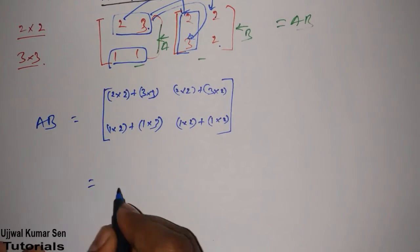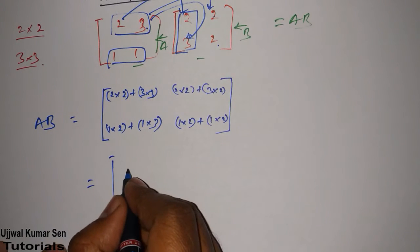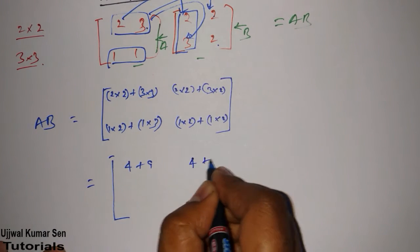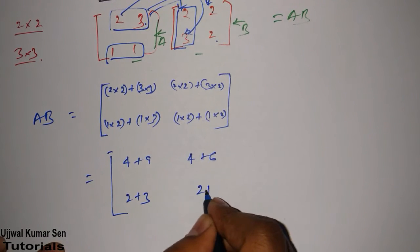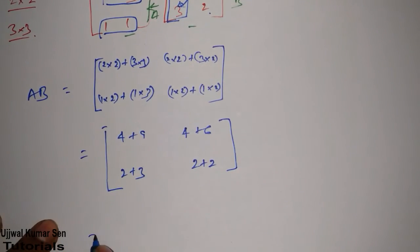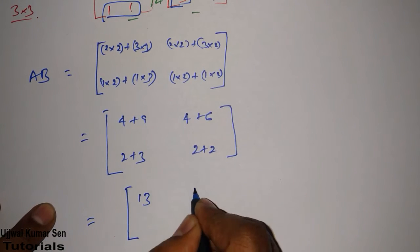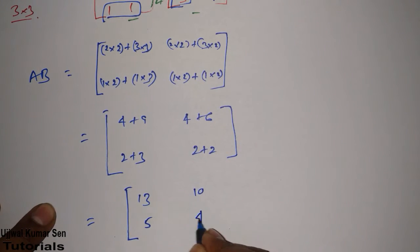AB is equal to this. So, this is 4, this is 9, this is 4, this is 6. This is 2, this is 3, this is 2 plus 2. So, what we got here? 13, 10, 5, 4.